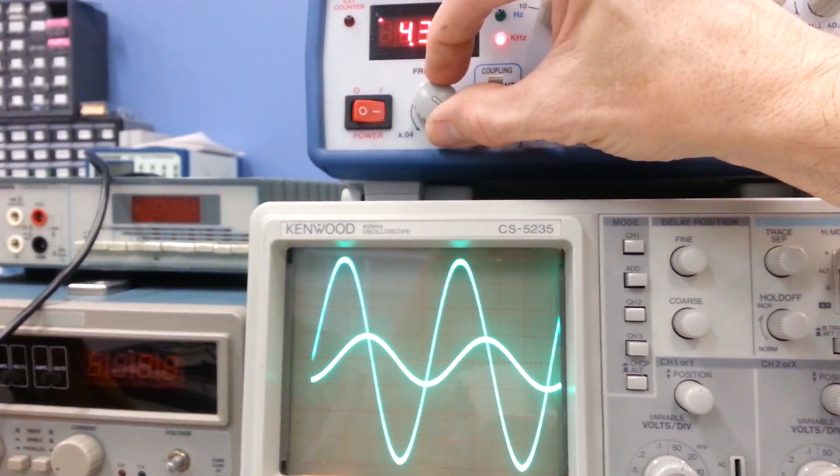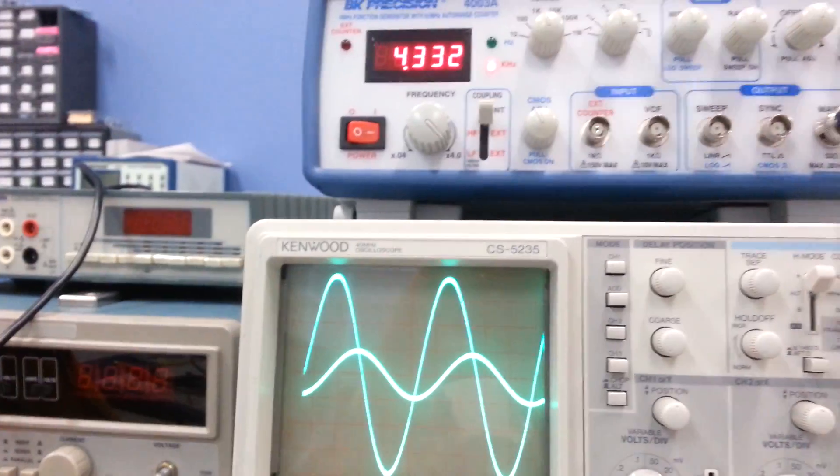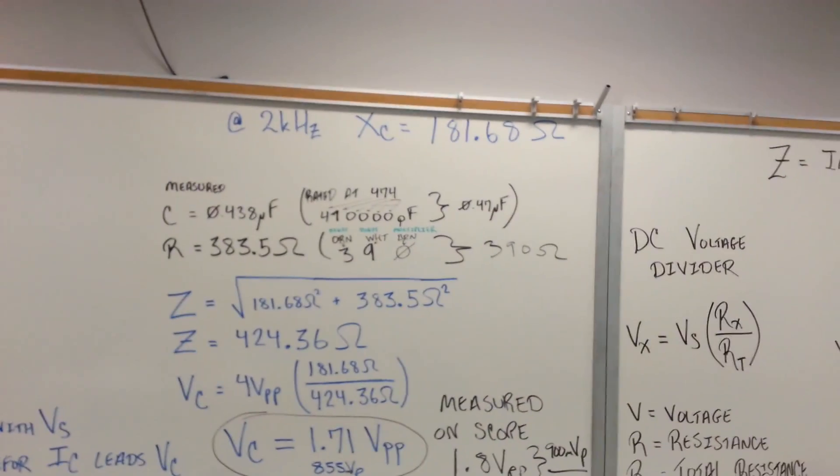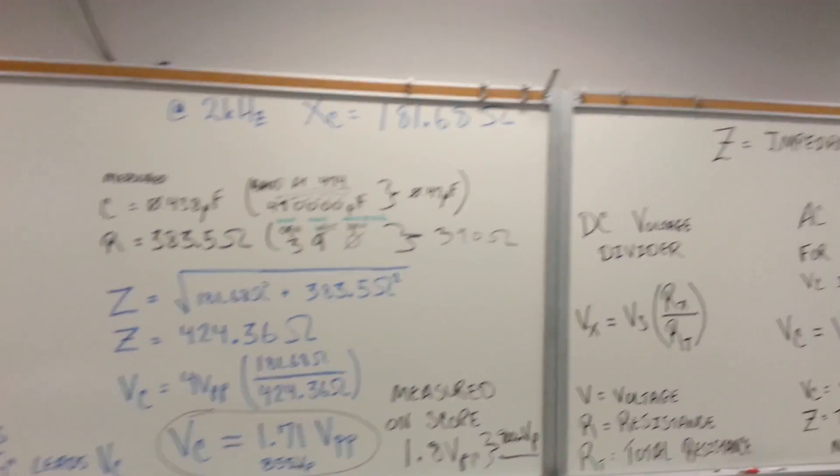Capacitors are considered an AC short and a DC open. Because once the capacitor charges up, in DC, ideally, current stops flowing. In AC, it's really less ohms, the higher the frequency.